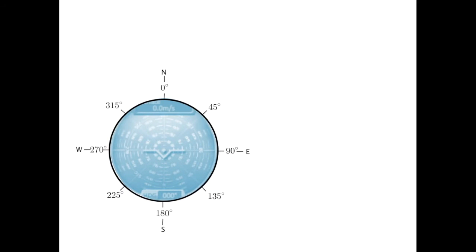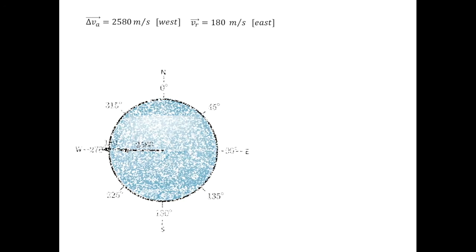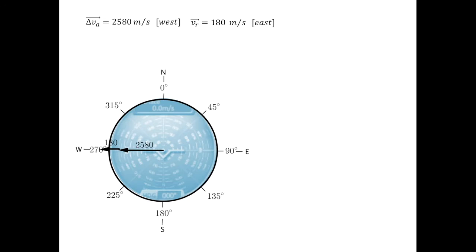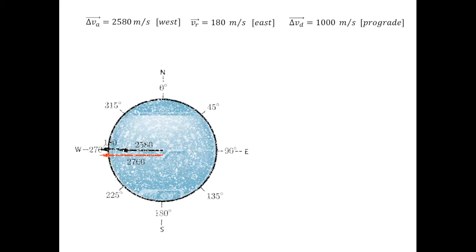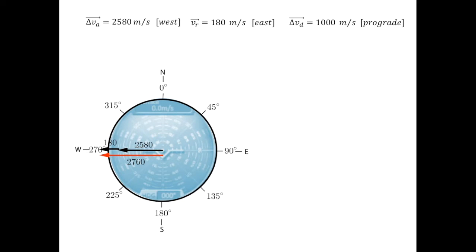Now let's look at a pure retrograde insertion. Now, delta VA is 2580 meters per second west. To which we add the opposite of VR, which is always going to be 180 meters per second west. It's not like the direction of Kerbin's rotation is ever going to change. This yields 2760 meters per second. To which we add delta VD, again 1000 meters per second prograde, yielding a required delta V of 3760 meters per second for a retrograde insertion.